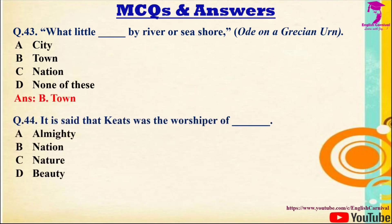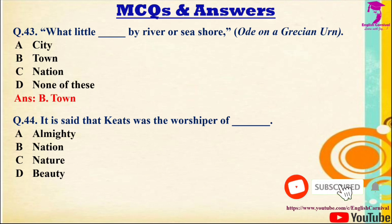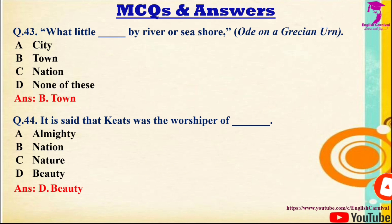Question 44: The urn is a foster child of — It is said that Keats was the worshipper of — Options: A) Almighty, B) Nation, C) Nature, D) Beauty. Correct answer is D — Beauty.